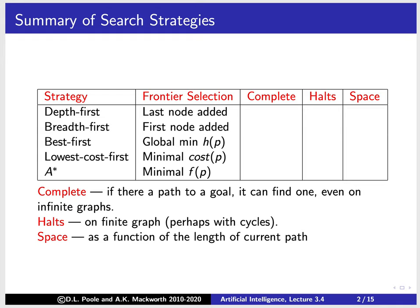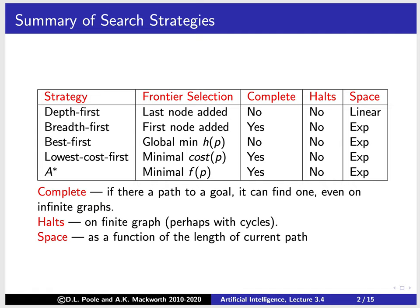Hi and welcome back. Last time there was a clicker question and it seemed very strange that these algorithms didn't halt on very simple graphs. When we looked at the summary of search strategies, what was very strange was this column where everything said 'halts: no,' even on finite graphs.